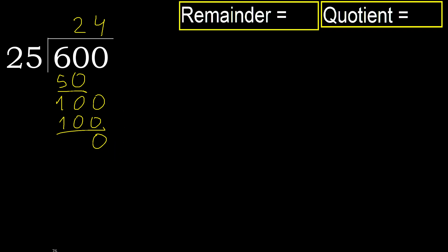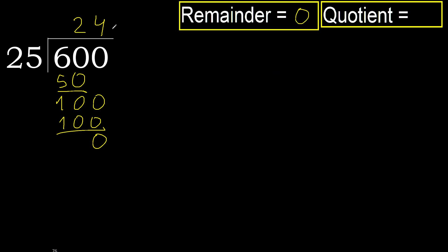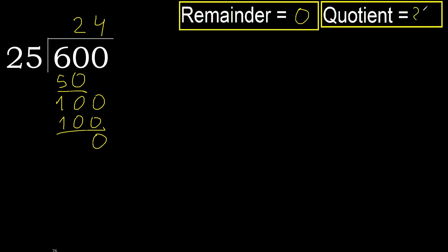There is no next number, therefore finish. 0 remainder, therefore 600 divided by 25 is 24.